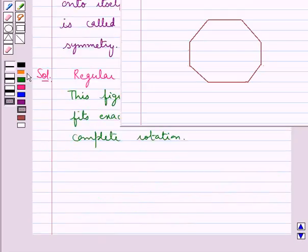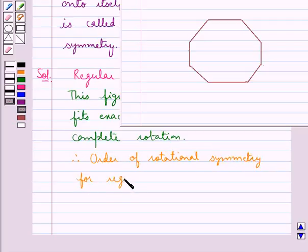So therefore the order of rotational symmetry for regular octagon is equal to eight.